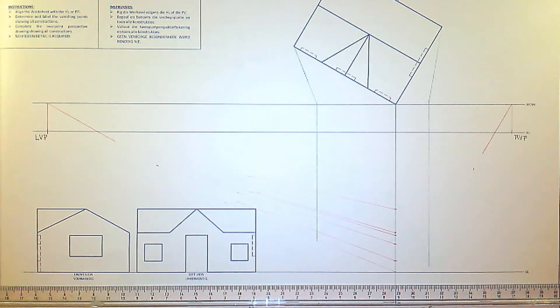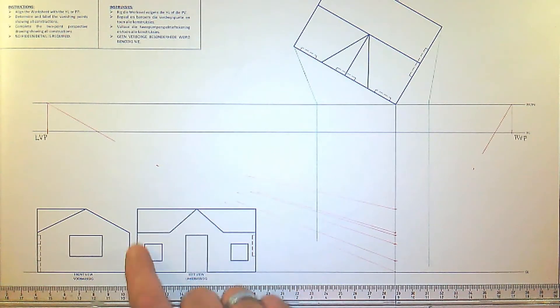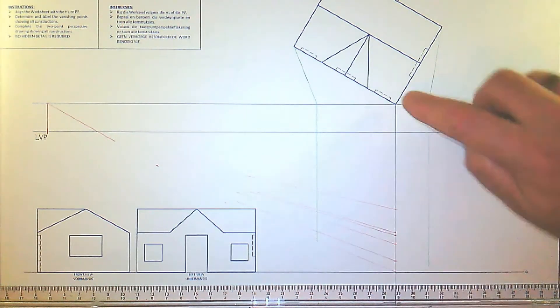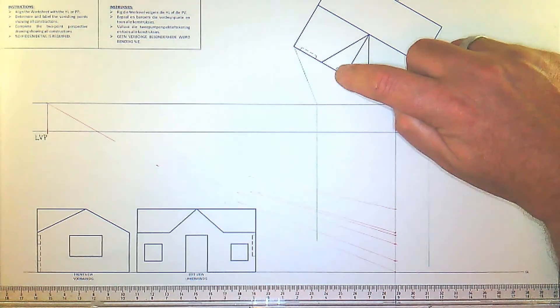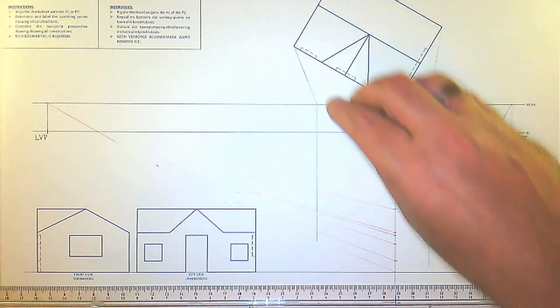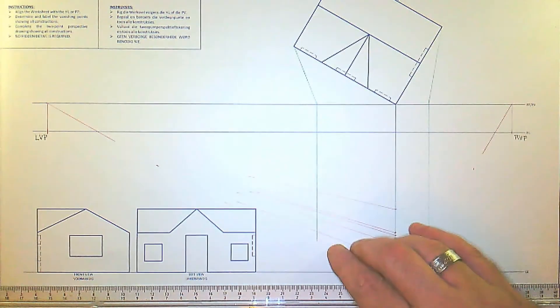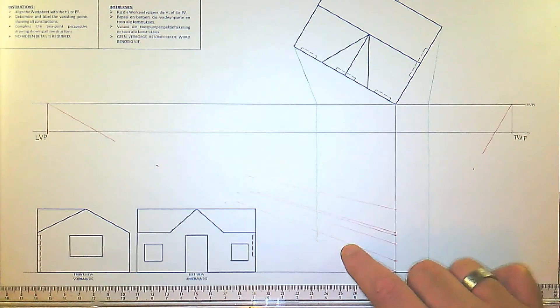Now to save time I'm actually going to draw this front profile all in one go here. So we're going to take all these points and take them to the SP and then straight down to the front side here.